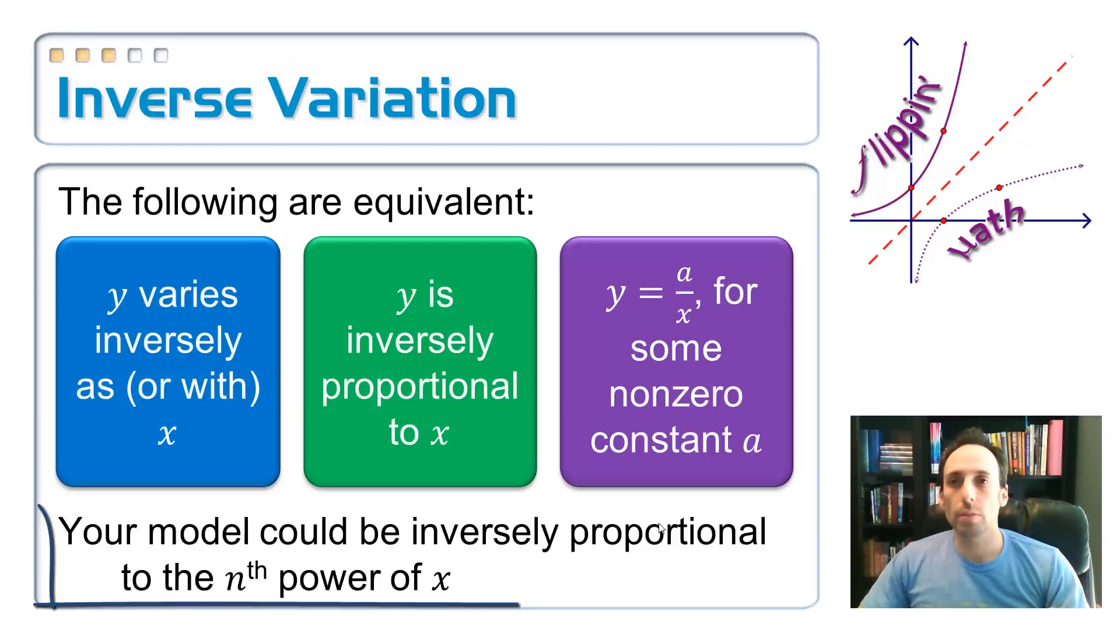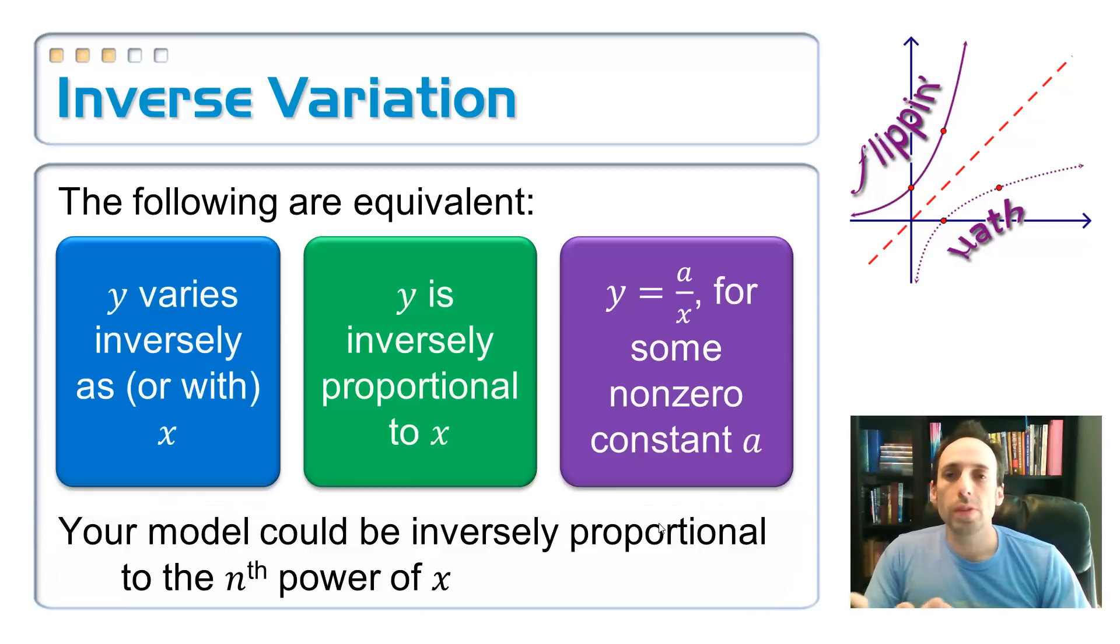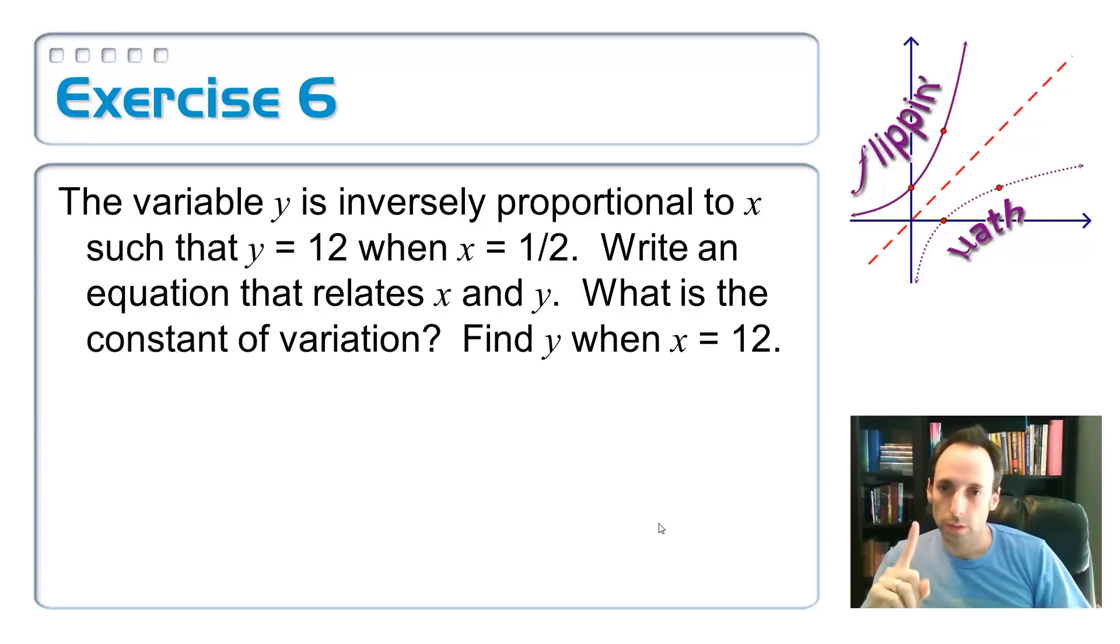And that x that's down on the bottom, it doesn't have to be just to the first power, it has to be to whatever power we want it to be. When we open this up, we were talking about gravity, and that was inversely proportional to the square of the distance between them. And so down on the bottom, it would have a little x squared instead.